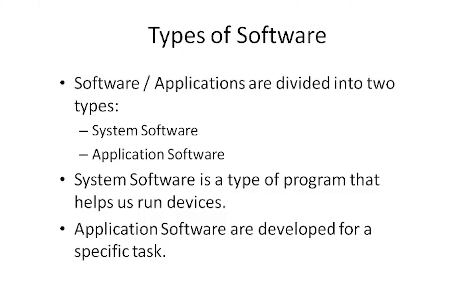You can divide software into two parts: system software and application software. System software are programs that help run your devices. For example, if you bought a computer but don't have an operating system, you would not be able to use it properly — you couldn't create new files or complete assignments. So the operating system is a system software that helps us run our computer.